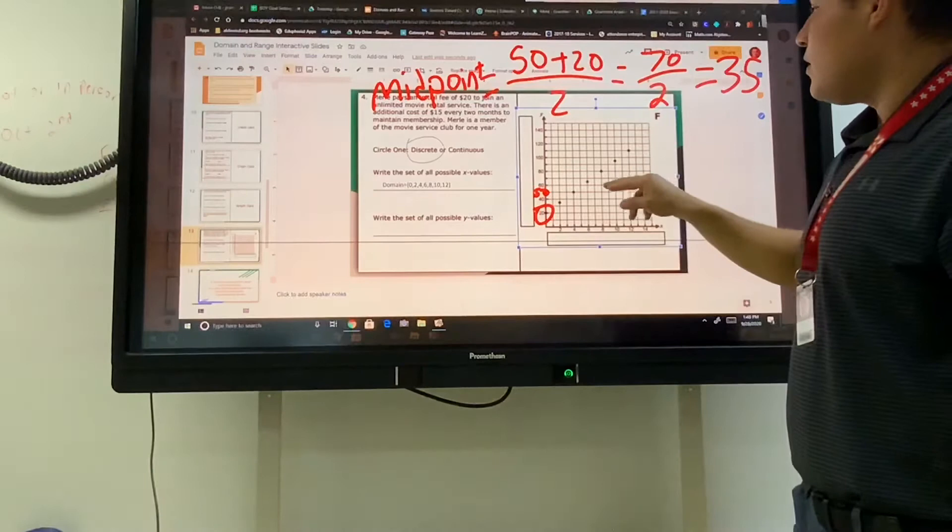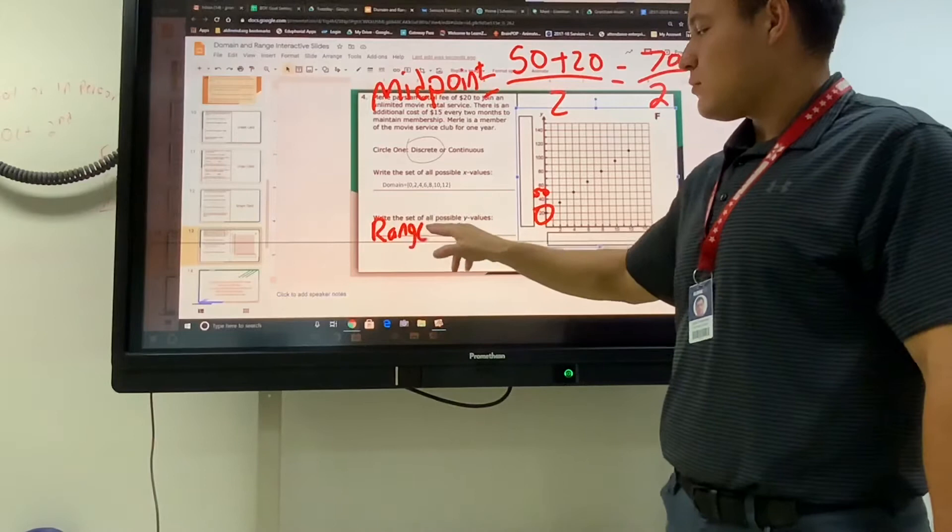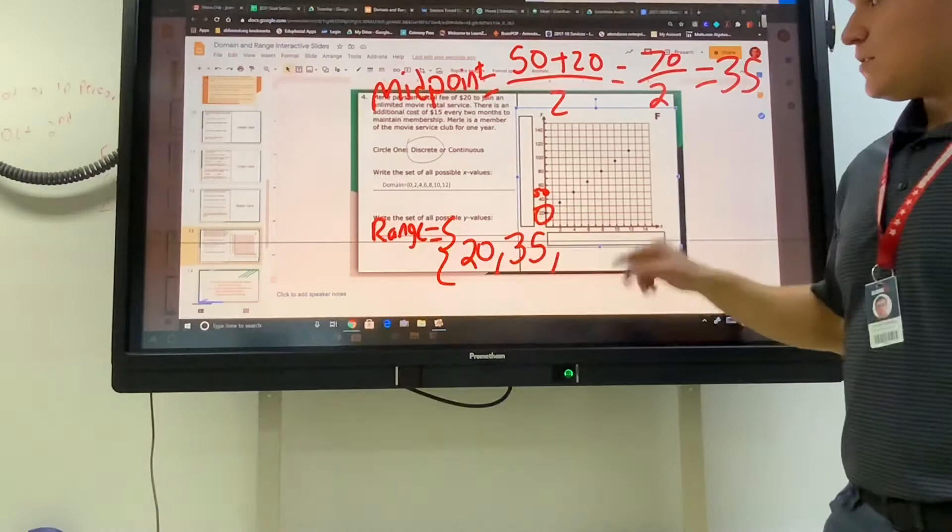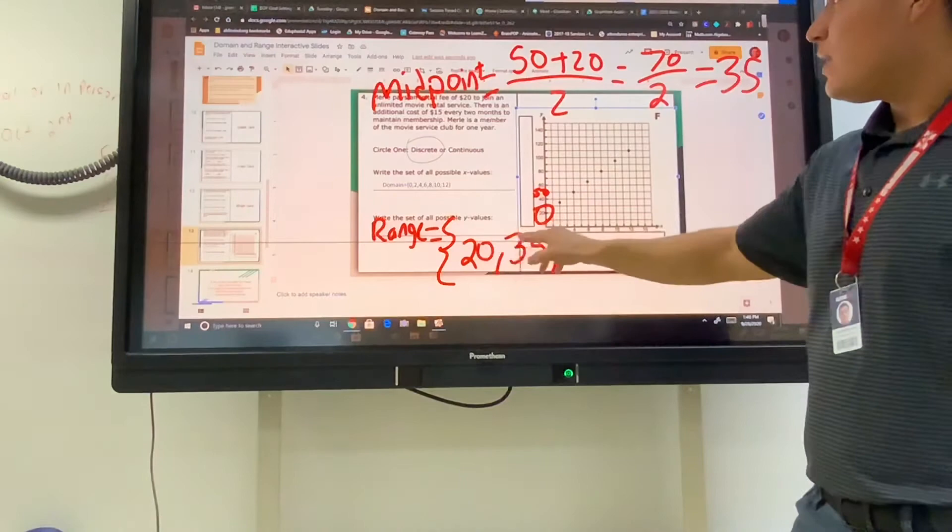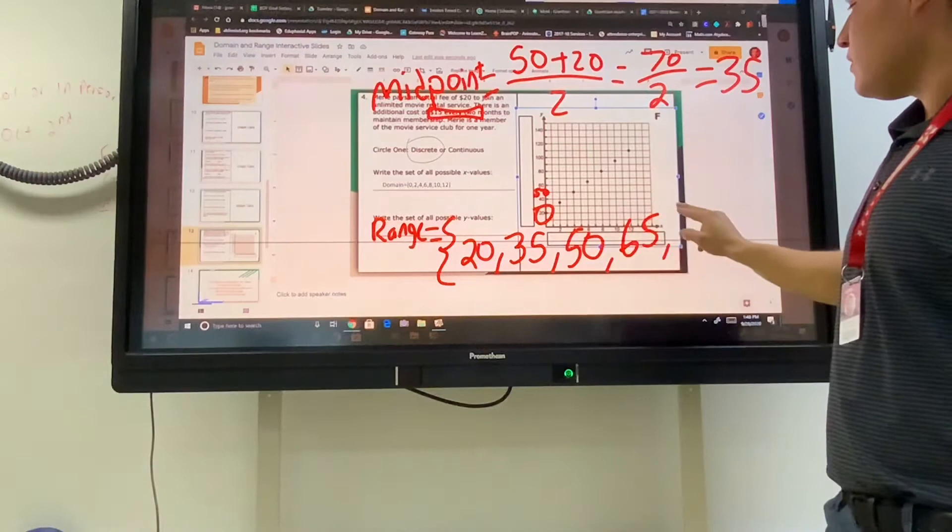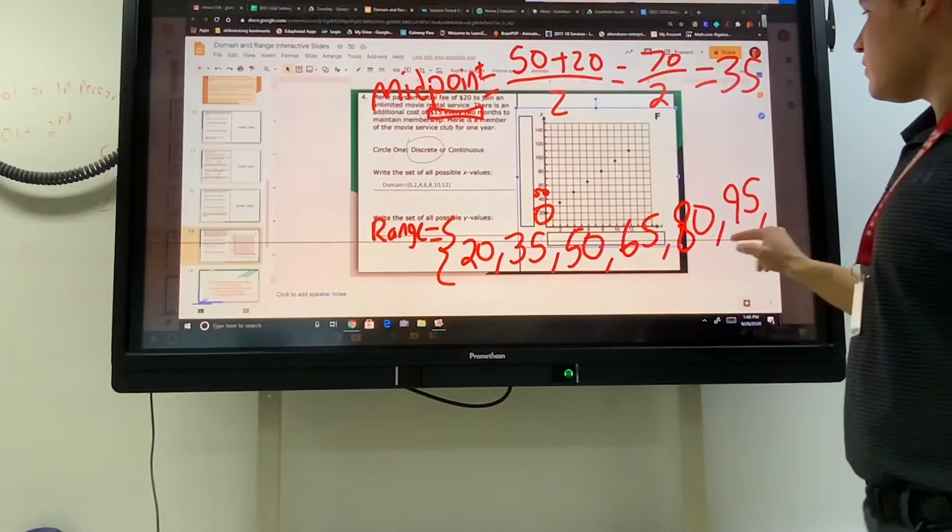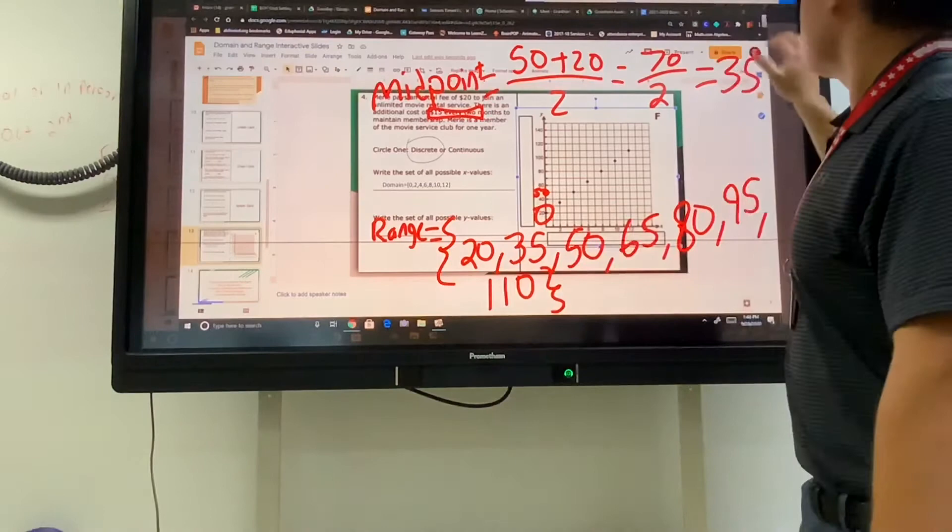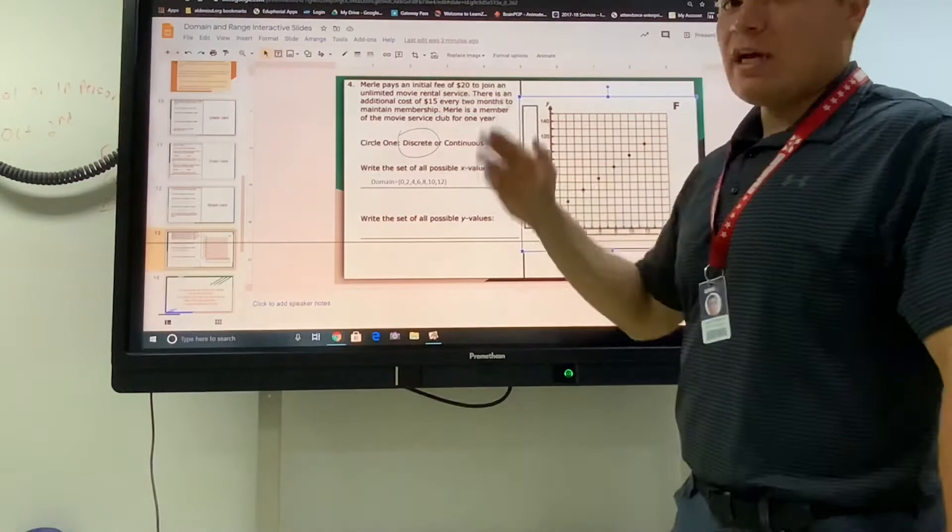So then our first y for the range, our first y is going to be 20, then we have 35. And that change between those, now that we know what that middle number is, now we can see what the change is from each y. The change was $15, so we're going to go up by 15 each time to get 50, 65, 80, 95, and then the last one we have is 110. You would type these ones in with your text box, starting from 20 you're going to count by 15s for your y's until you get to 110.